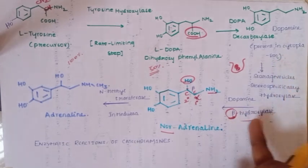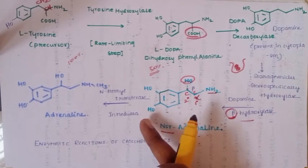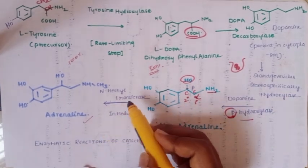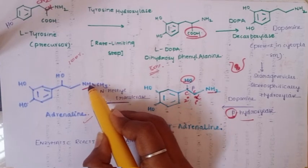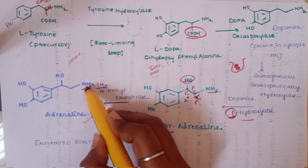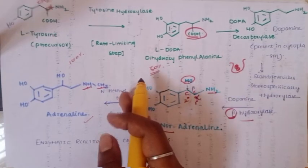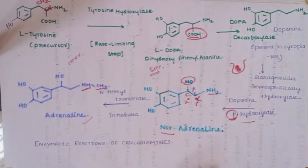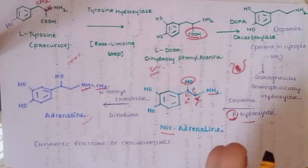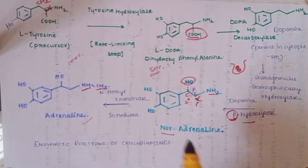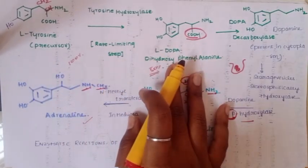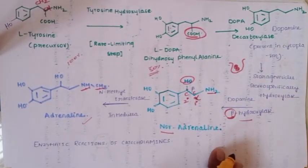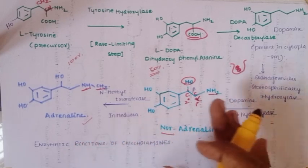N-methyl transferase adds an N-CH3 (methyl) group to noradrenaline to produce adrenaline. This occurs in the cytoplasm of the adrenal medulla. This is the most important enzymatic reaction of catecholamine biosynthesis. So to summarize: tyrosine → L-DOPA (tyrosine hydroxylase) → dopamine (dopa decarboxylase) → noradrenaline (dopamine beta-hydroxylase) → adrenaline (N-methyl transferase).